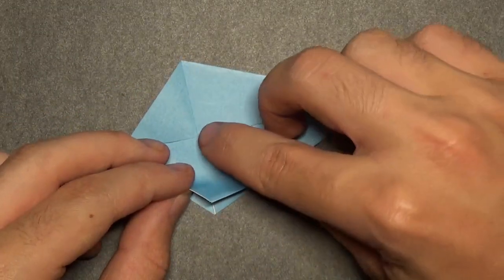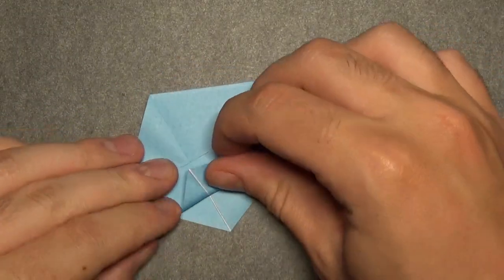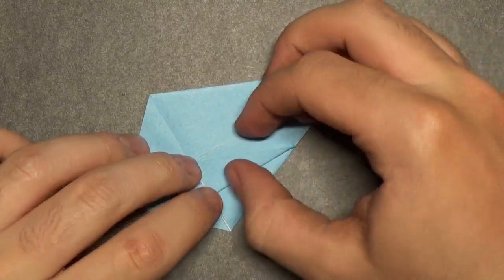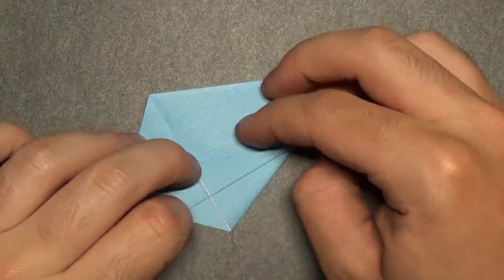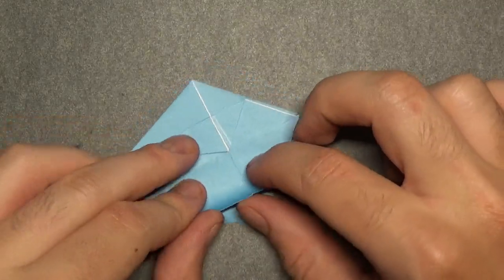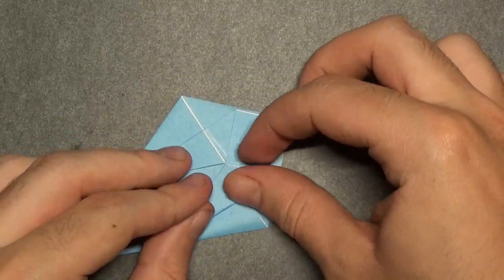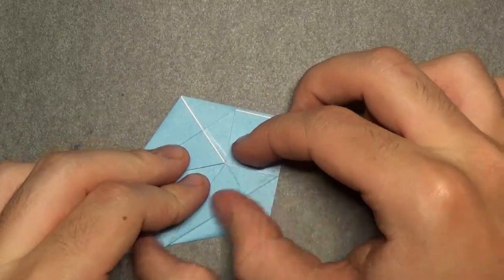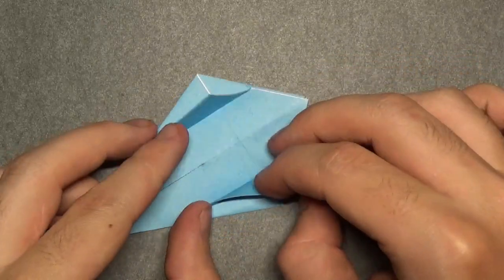And take this corner and fold it to the intersection. Make sure you hold everything down too. And repeat on this side, fold this point to here. Okay, like this.